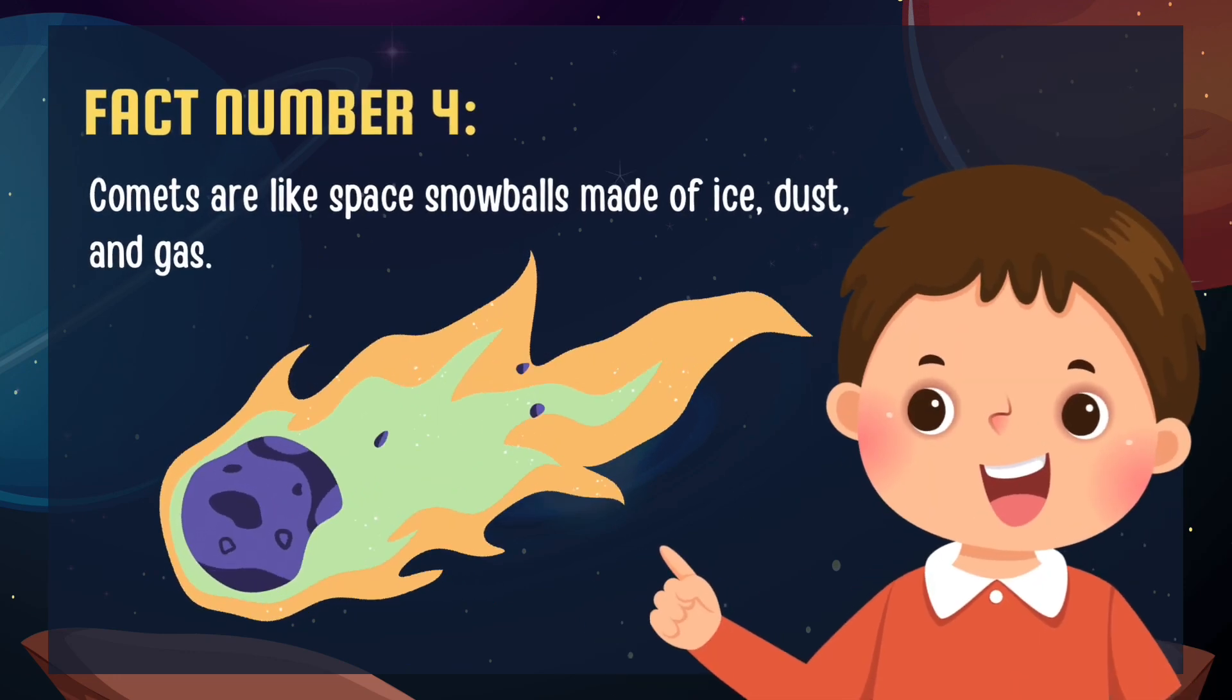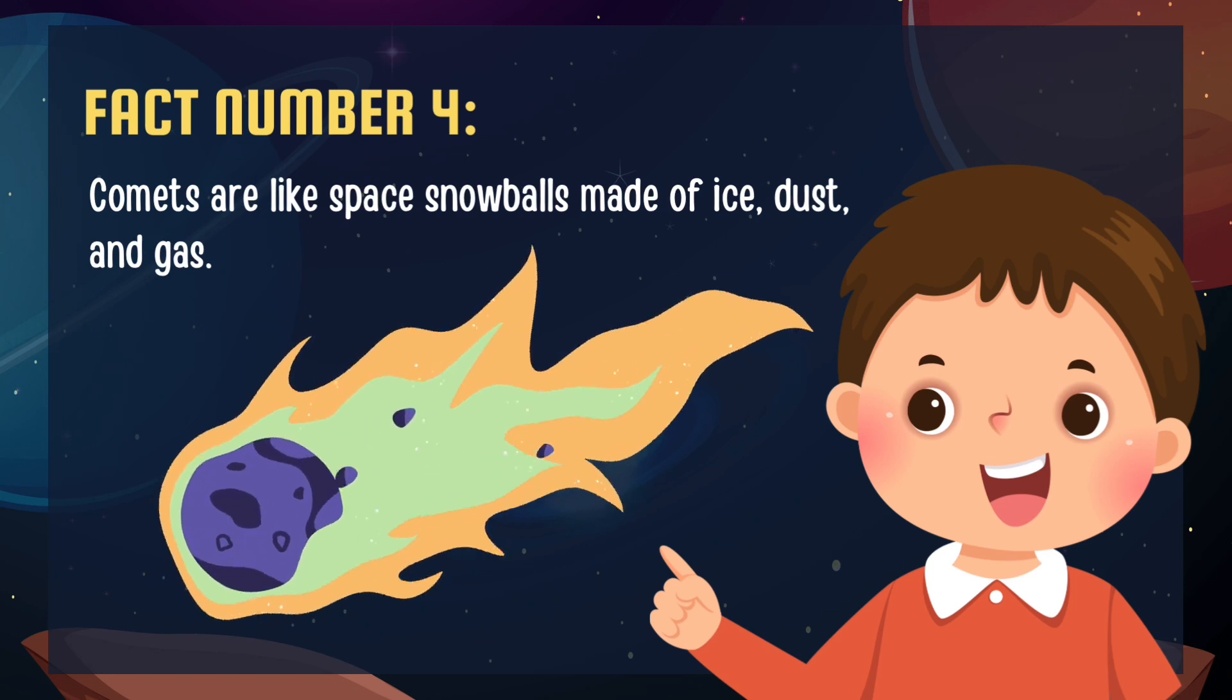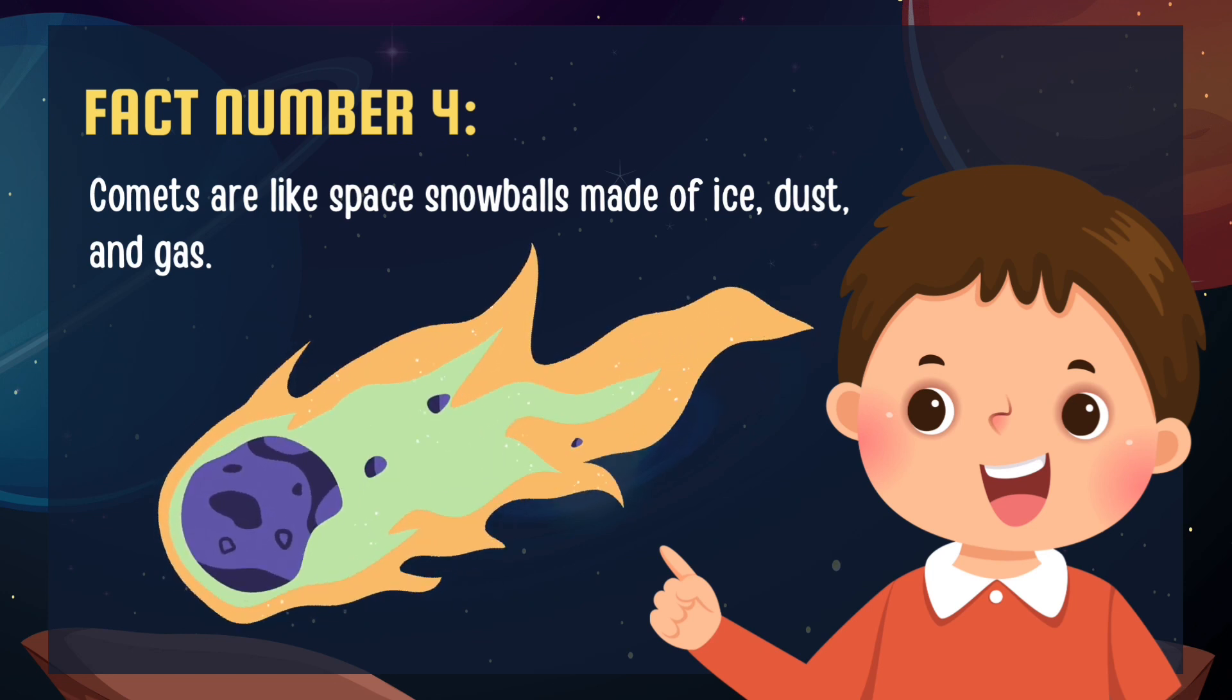At number 4, say hello to comets. They're like space snowballs made of ice, dust, and gas. When they get close to the sun, they create stunning tails that light up the night sky.